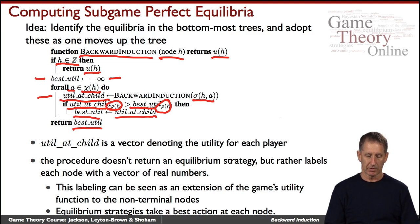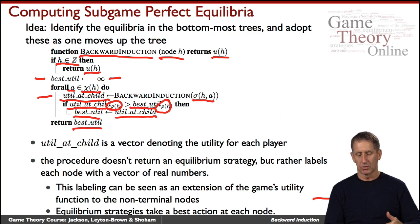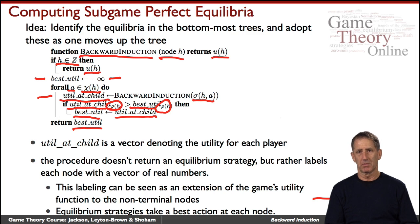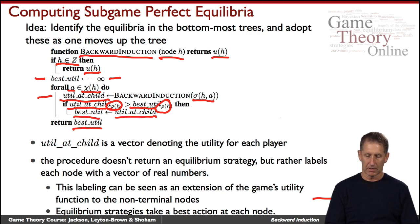That is the backward induction procedure. Notice that we don't return a strategy — we just return the list of payoffs. In some sense, it's simply extending the payoff from leaf nodes to all internal nodes. But even though we don't explicitly return the equilibrium strategy, the one that will be subgame perfect, it's easy to read it off those numbers: at every node, the agent takes the action that leads to the child node with the best utility from their point of view. That is the procedure for computing subgame perfect equilibria.